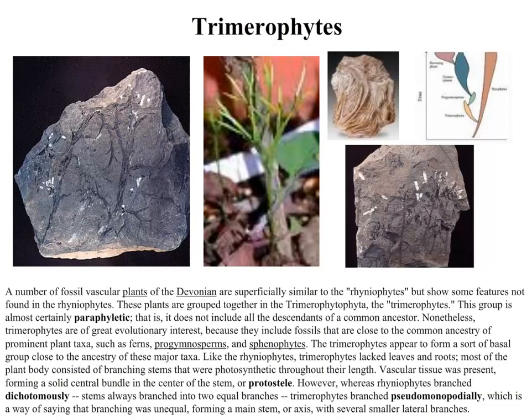The trimerophytes are the next group and they start to get even more evolutionarily advanced. It definitely looks like this group had some primitive leaves. As plants get taller, they start to have to have a better-established root system as well. As they become larger, they have to have more capabilities for food to meet all of the energy needs of the plant.